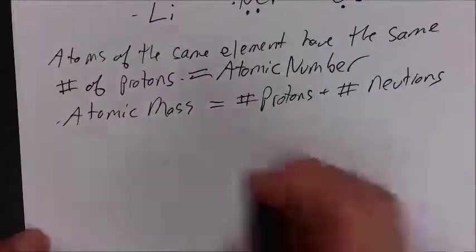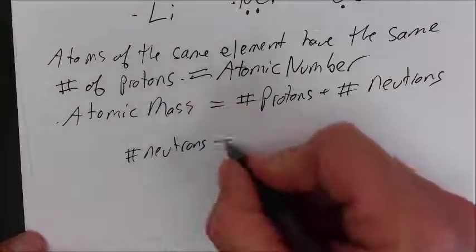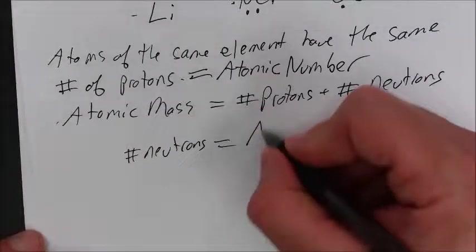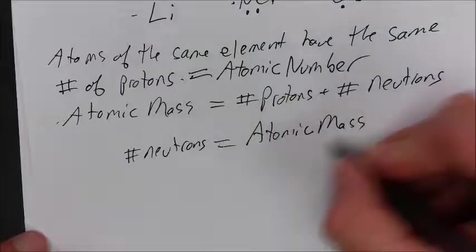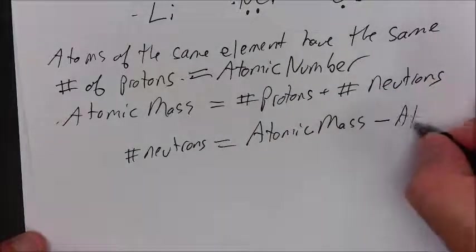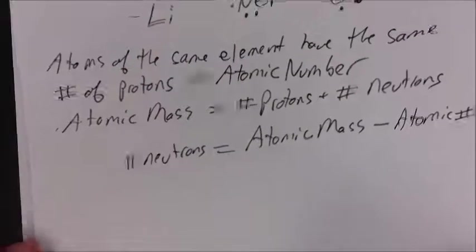The atomic mass is equal to the number of protons plus the number of neutrons. So if you want to calculate the number of neutrons, that's equal to the atomic mass minus the atomic number.